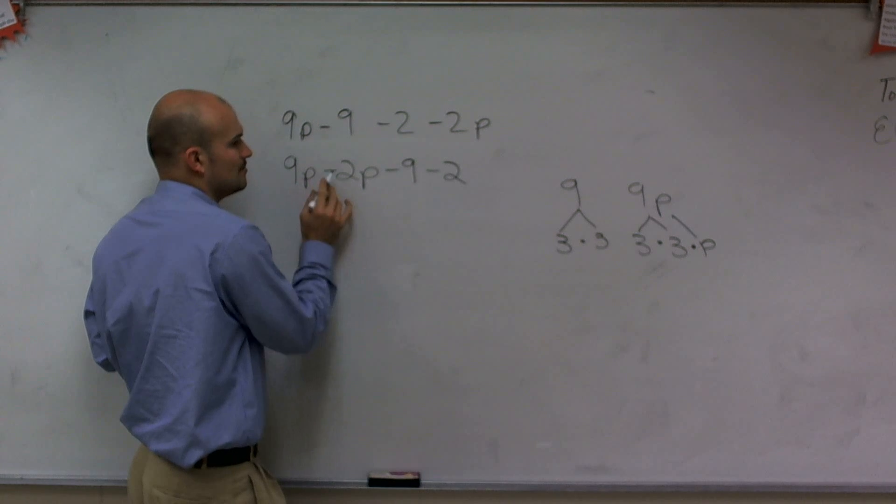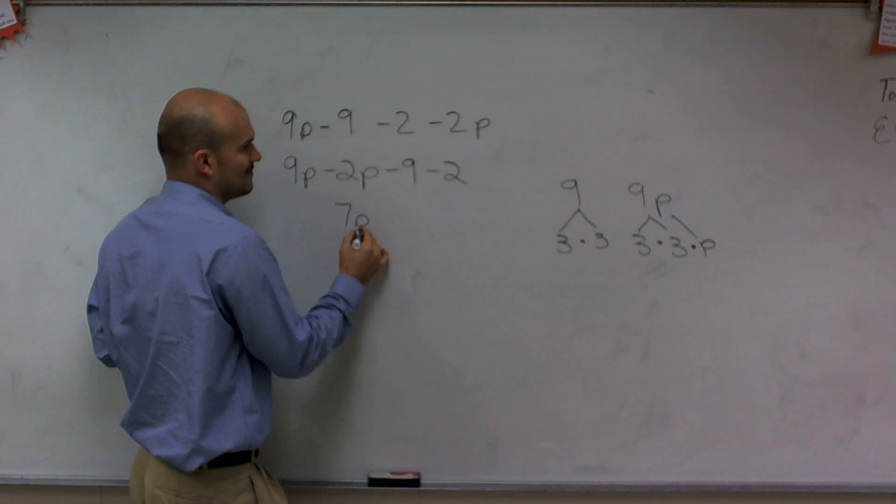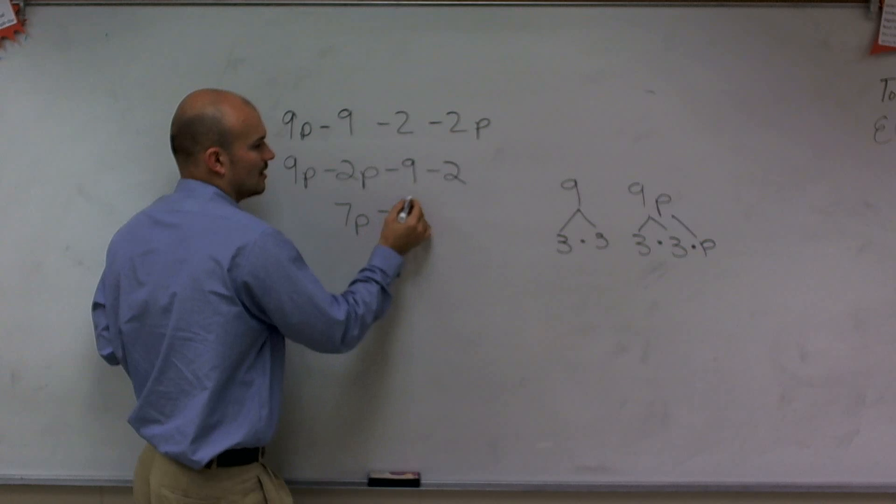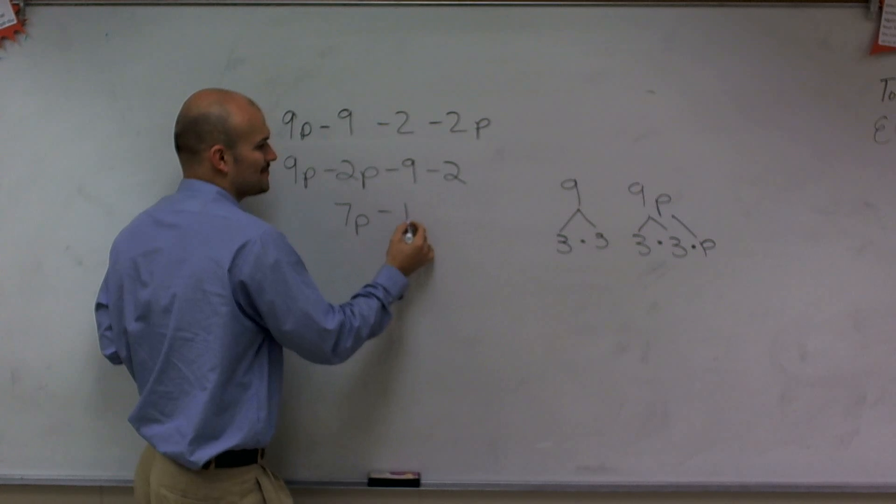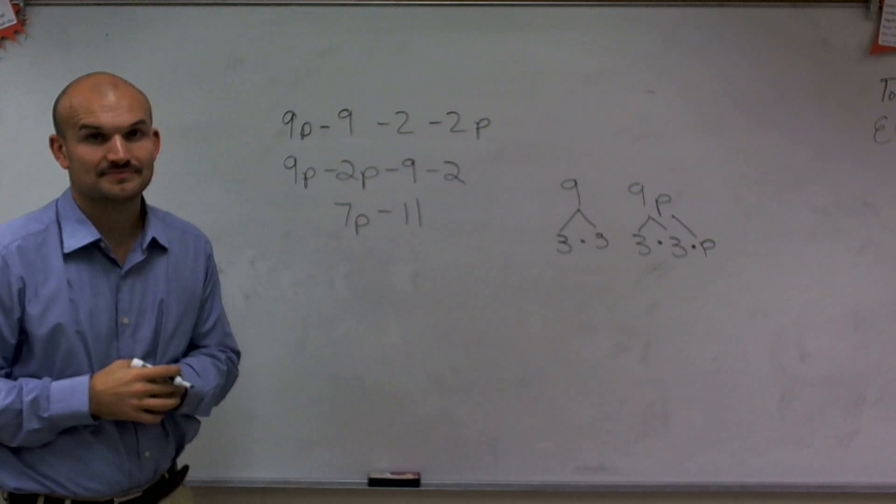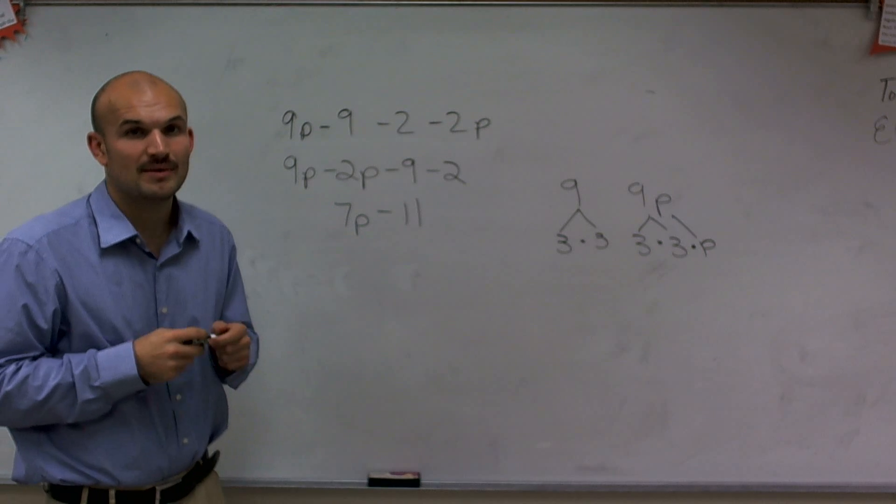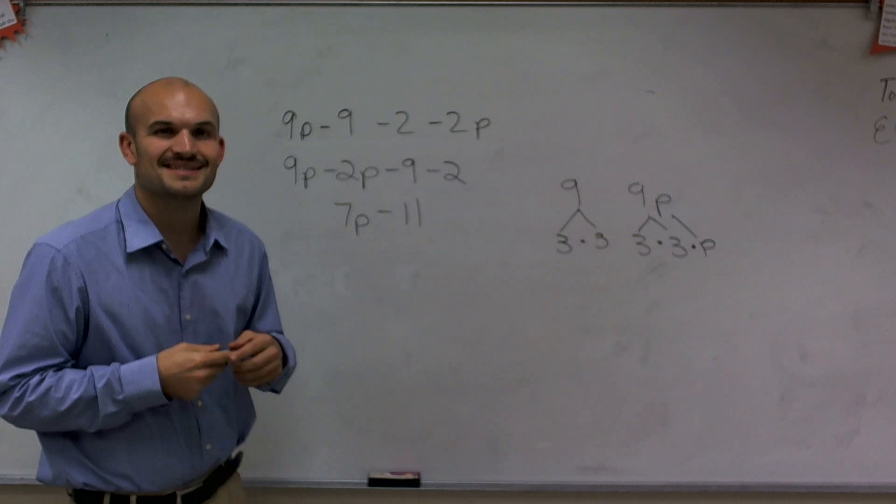Now I have 9p minus 2p is 7p. And negative 9 minus 2 is negative 11. So there I go. My simplified expression is 7p minus 11. Hope you enjoyed. Thanks a lot.